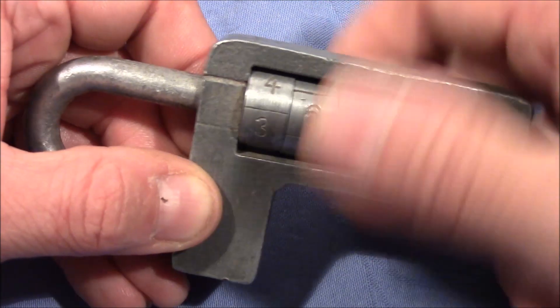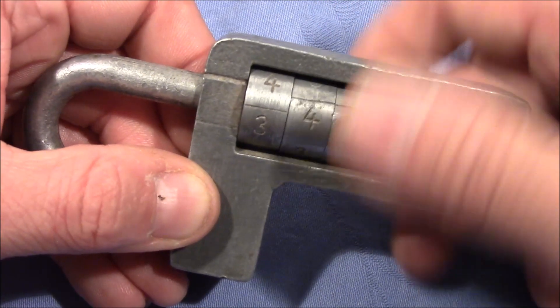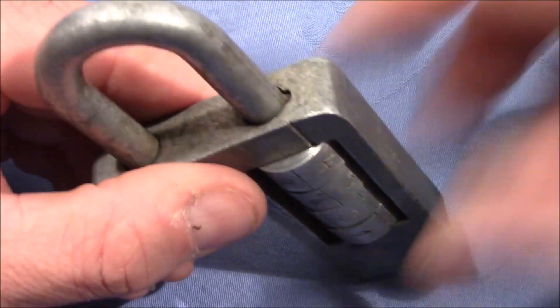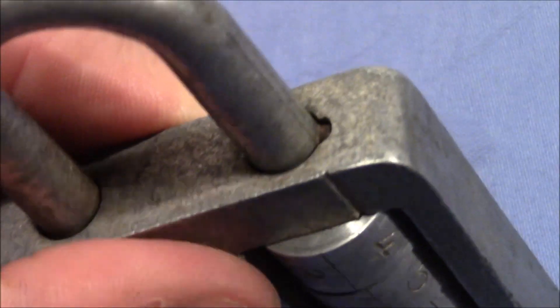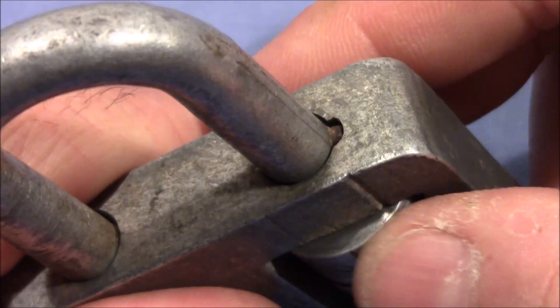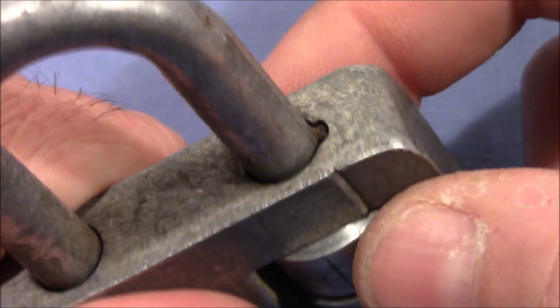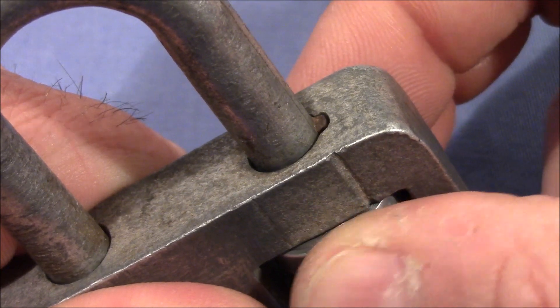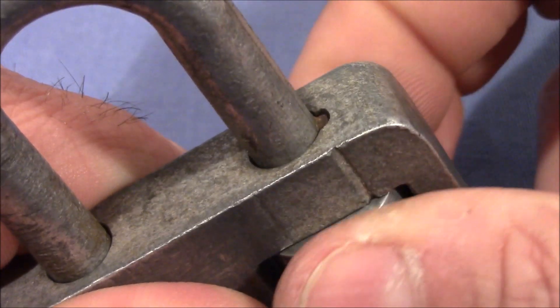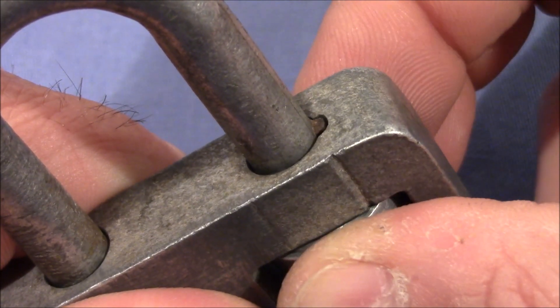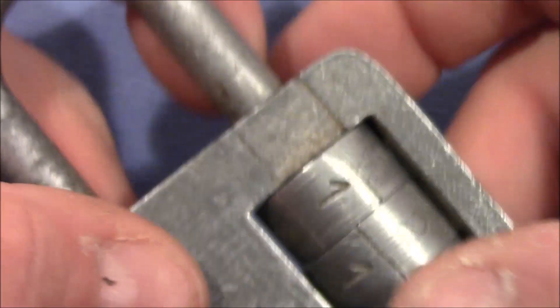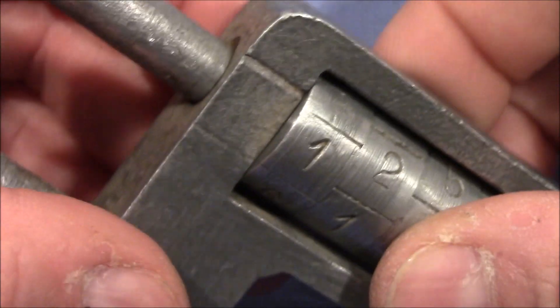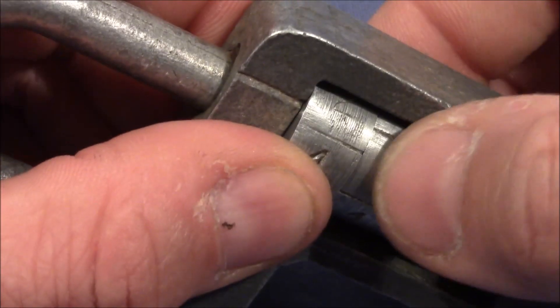And we can observe the shackle movement to find out which number is the right one on the first wheel. So turn it, and you can see it comes out, so here it gets retracted and here it comes out and here it stops. So one is the first number. I hold the wheel and turn the second wheel and it stops here, so two is the next.